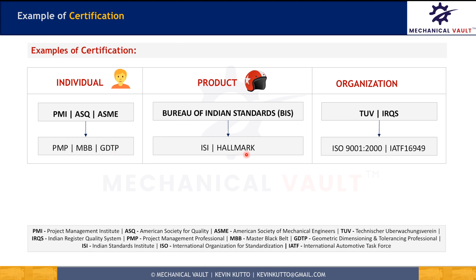Similarly, Hallmark for Gold or ISI for products — offered by the Bureau of Indian Standards (BIS) — adds credibility to product quality. Third-party organizations like TUV or IRQS conduct audits and award ISO 9001:2000 or IATF 16949 certifications. Hopefully, you now have a clear understanding of how certification works.